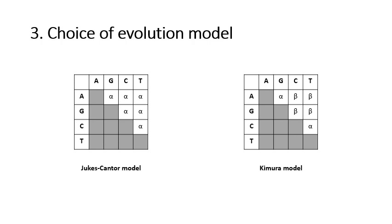The third step in constructing a phylogenetic tree is the choice of evolution model. There are two different models. The first is the Jukes-Cantor model, according to which all nucleotides have equal substitution rates — A to G, A to C, A to T, G to C, G to T, and so on all have equal substitution rates. The second is the Kimura model, according to which transitions (represented by alpha) are more prevalent than transversions (represented by beta). The Kimura model is biologically more correct compared to the Jukes-Cantor model.